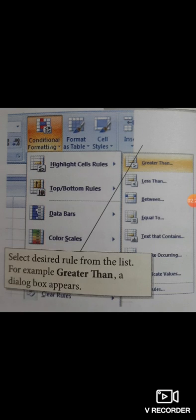When we click on Highlight Cell Rules, a sub-menu will appear with different options. Here we select the Greater Than option. When we click on Greater Than, a text box appears.